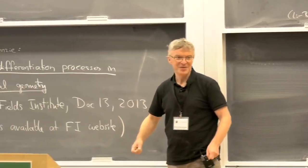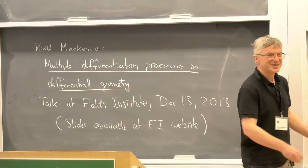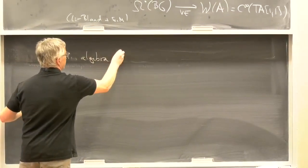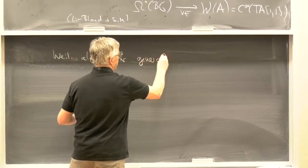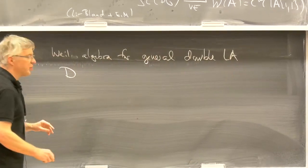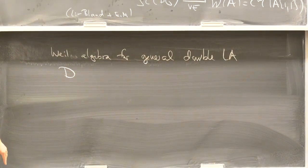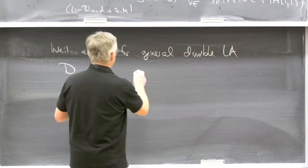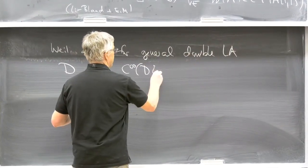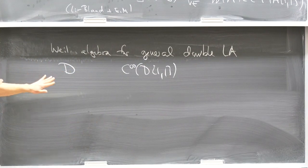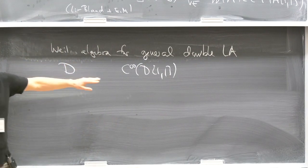The question was how to define the Weil algebra of a double Lie algebroid, and that was already answered in Kirill's talk. He explained this is due to Ted Voronov. So the Weil algebra for a general double Lie algebroid is some double vector bundle, and the fact that this is equivalent to an algebra with two commuting differentials is a hard theorem — mostly because the definition of a double Lie algebroid is itself rather hard.